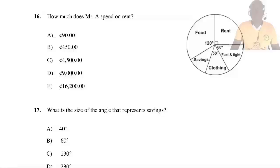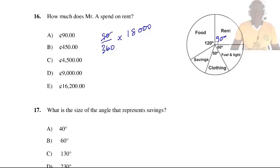Question 16: How much does Mr. A spend on rent? The amount spent on rent = (90/360) × 18,000 cedis = (1/4) × 18,000 = 4,500 cedis. So the answer is C.